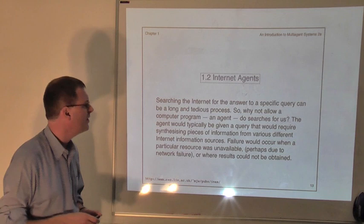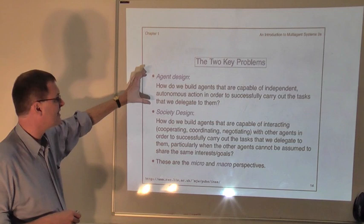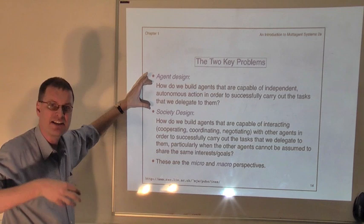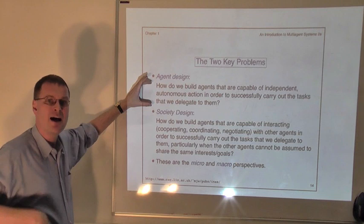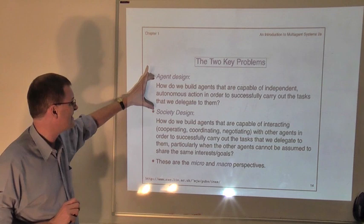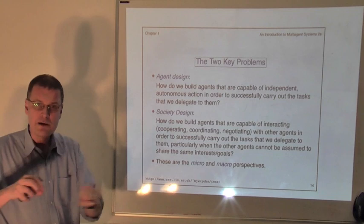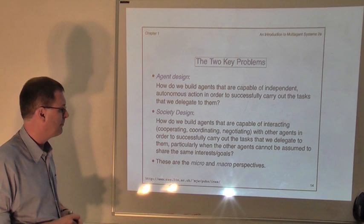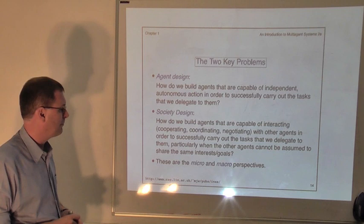So what is this course about? I've painted you a vision of what I think agents are and why I think agents are important. What is this course about? Well, it's about two key problems. These two key problems are firstly, if we want to build one of these agents, how do we do it? How do we put a single agent together? And the key issue there is the decision making. Going from a delegated goal, a goal or a task which a user or owner gives to a computer program, and figuring out for itself how to accomplish that task. Deciding what to do. Something that can decide what to do essentially is an agent. And that's the agent design problem. And the society design problem is what happens when you put a bunch of these agents together with one another. How can we design computer programs that can cooperate, coordinate, or negotiate with one another in order to accomplish these goals? And we sometimes talk about these two different perspectives on the multi-agent systems paradigm as being the micro and macro perspectives.